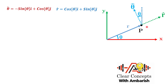Now, what about the r cap vector? The horizontal component is cos theta and the vertical component is sin theta, so r cap = cos theta i cap + sin theta j cap. These are the unit vectors. For finding velocity I need to differentiate the position vector, and for acceleration I need to differentiate the velocity vector.